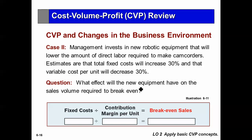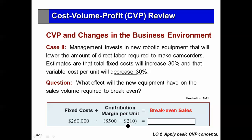Another situation: management invests in new robotic equipment that will lower the amount of direct labor required. Estimates are that total fixed cost will go up by 30% and variable cost per unit will decrease by 30%. Fixed cost increases to $260,000. Variable cost decreases by $30,000. Therefore, contribution margin increases to $390,000 instead of $300,000. The break-even in sales then goes down to $897,000 instead of $1,000,000. My break-even in sales goes down, and therefore profit goes up, if this new equipment is installed.